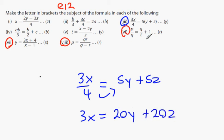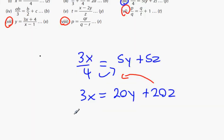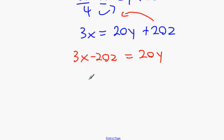I want the Y on its own. I'm going to bring the 20Z over the other side. So what we're going to get is 3X minus 20Z equals 20Y. Now what? How do we get the Y on its own? Divide by 20. 3X minus 20Z all over 20.